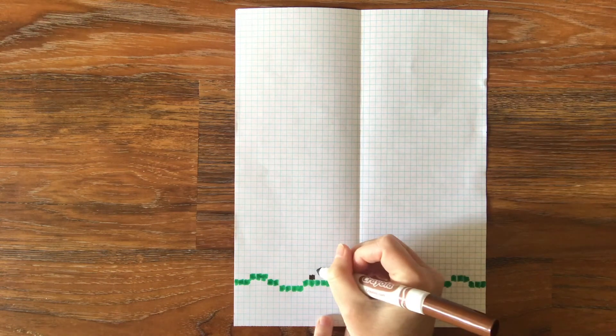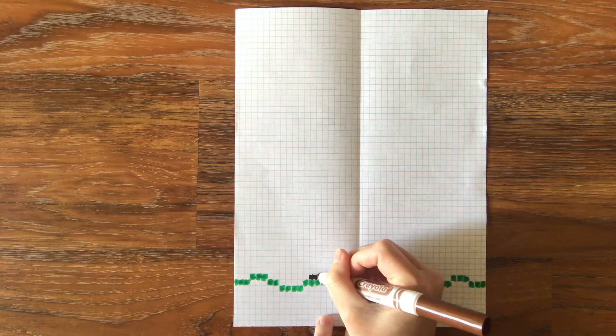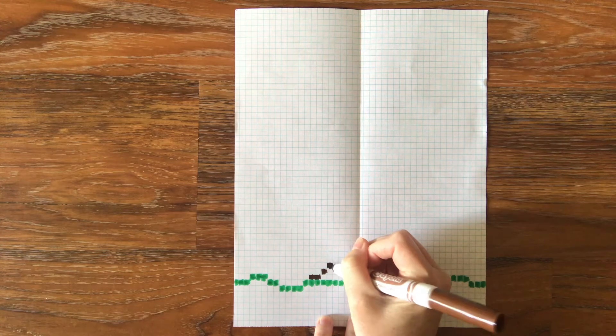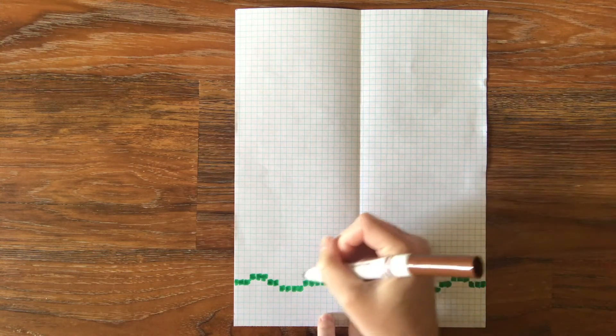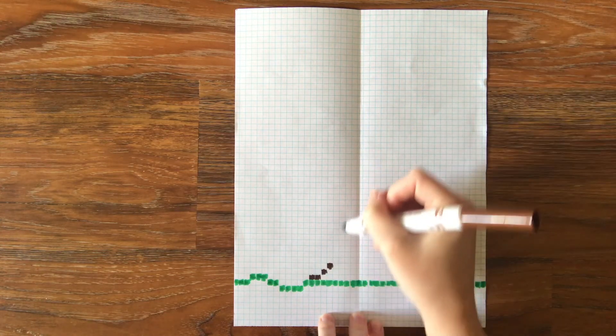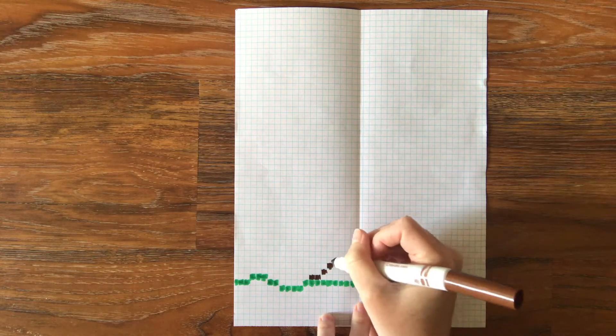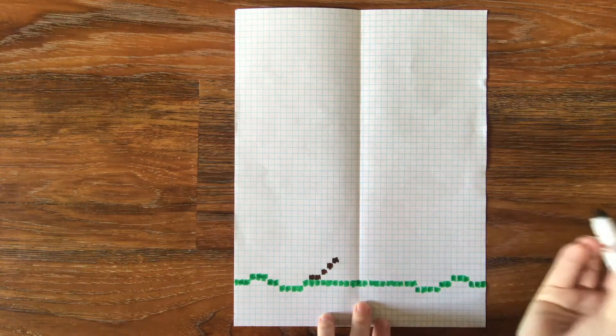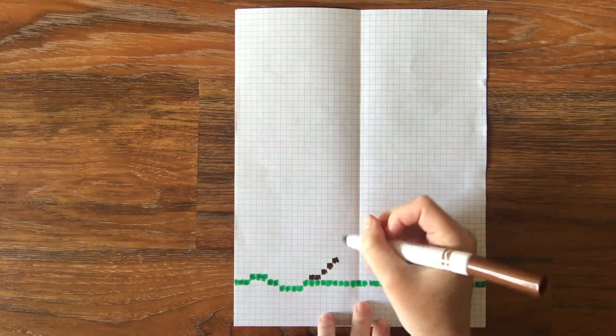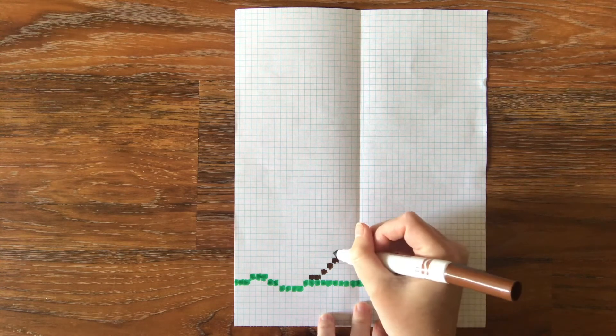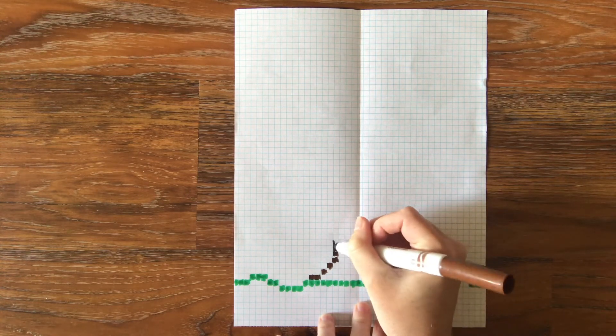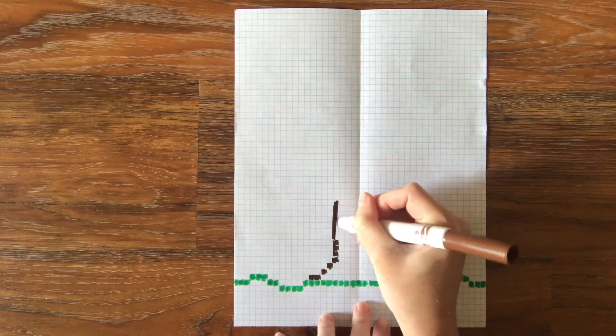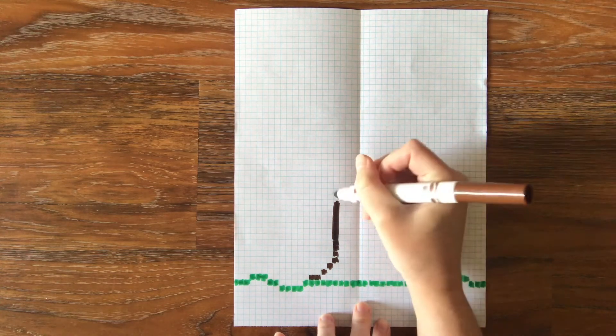I'm going to start here. I'm going to do kind of this curved going up to the trunk, or going up the trunk. Decide how skinny I want to get. I think that's probably it.